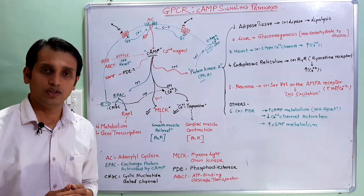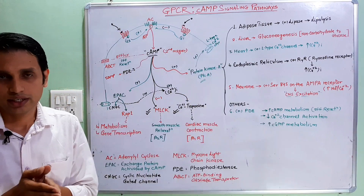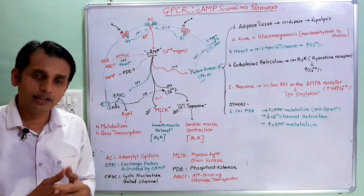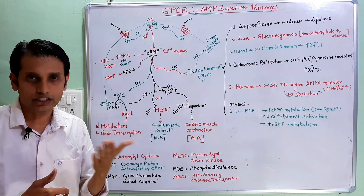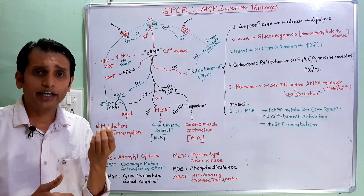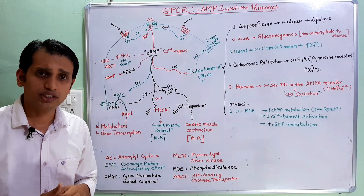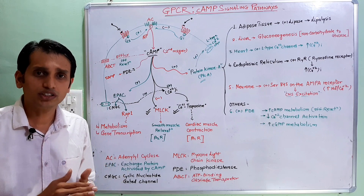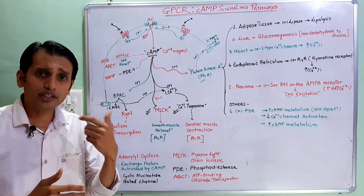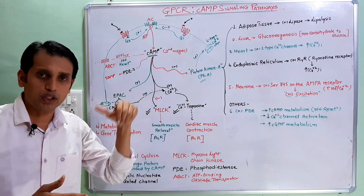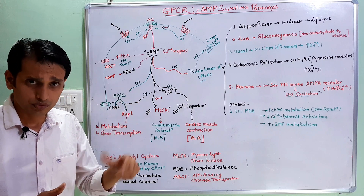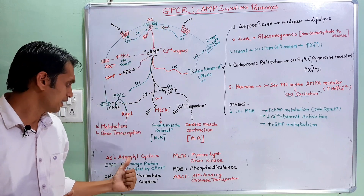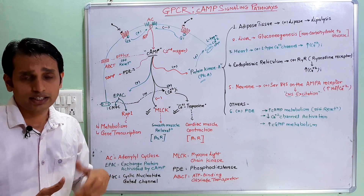In GPCR, drugs mainly bind with the receptors at their ligand binding site. After activation of GPCR receptors, the inactivated G-proteins further bind with the receptors at their G-protein binding sites. After activation of G-proteins, they modulate the effector protein — in case of the cyclic AMP pathway, the G-proteins modulate the activity of AC enzyme, meaning adenylyl cyclase enzyme.